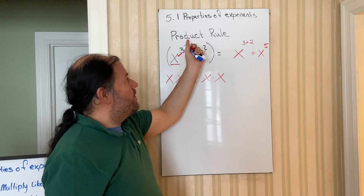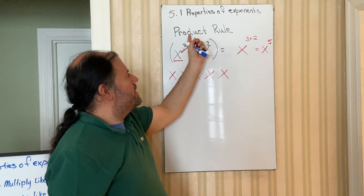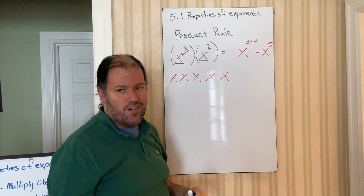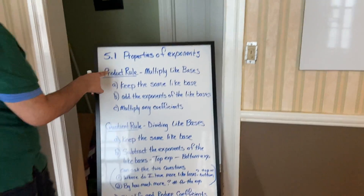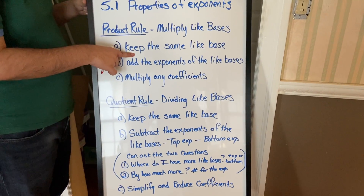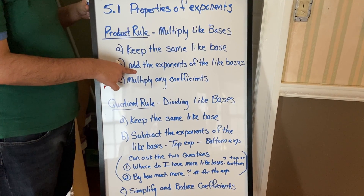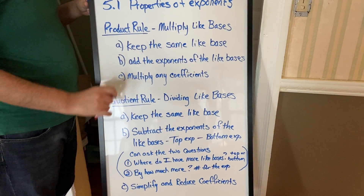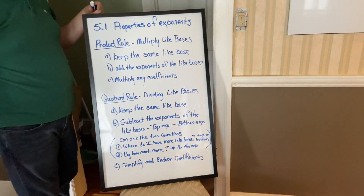This is a little tricky for some people because they think 'product' means multiplication. But what this is really saying is that your bases are being multiplied, not necessarily your exponents. So this is the product rule: when you're multiplying like bases, keep the same like base and add the exponents of the like base. And then if they have any coefficients, you're going to multiply them out. Let's do another problem that has coefficients.